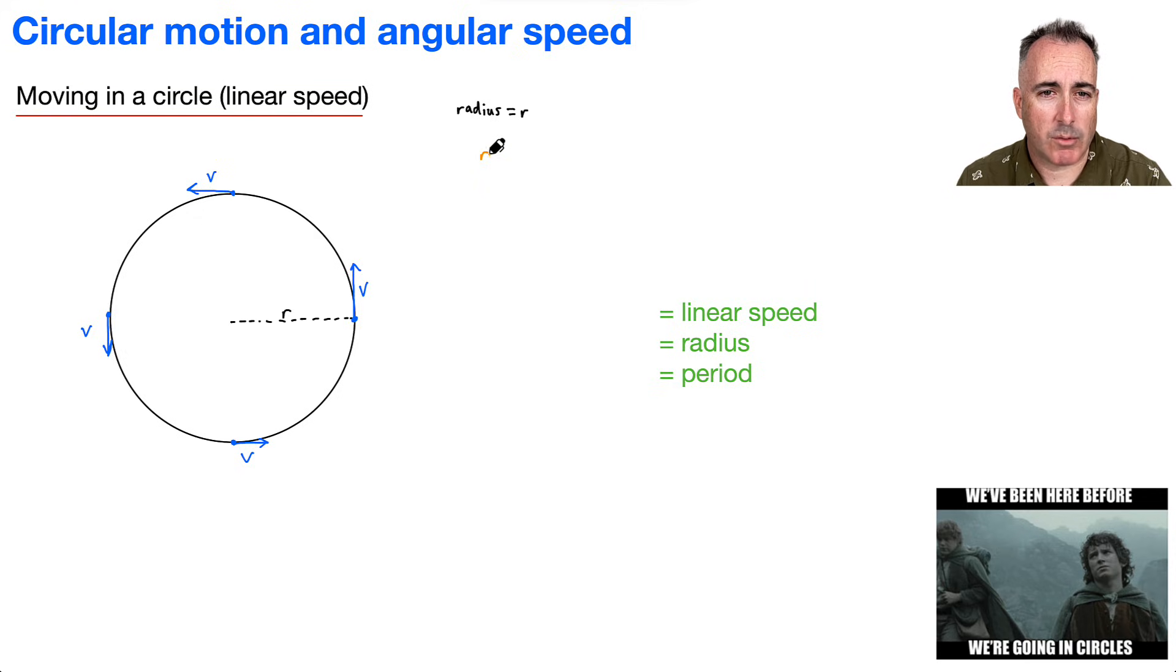Remember what we have for speed. Remember that V equals a distance over a time. So that means you just have to remember, what is the distance by going around in a circle? Remember that a circle, if I go all the way around, that's actually 2 pi r. That's the circumference of a circle.